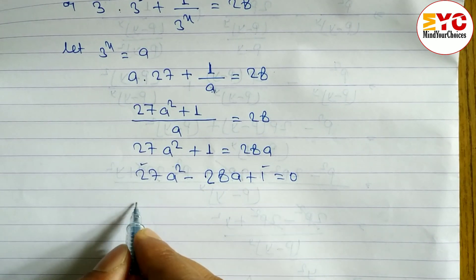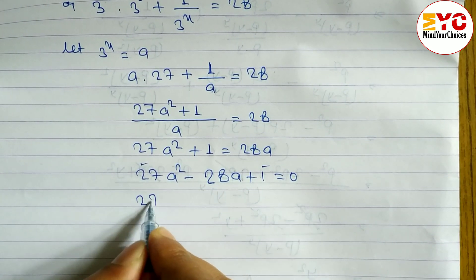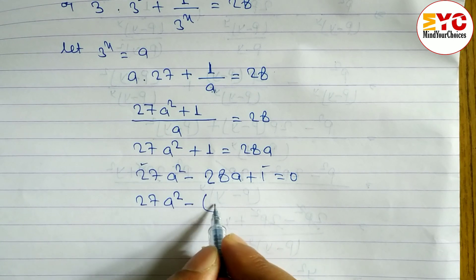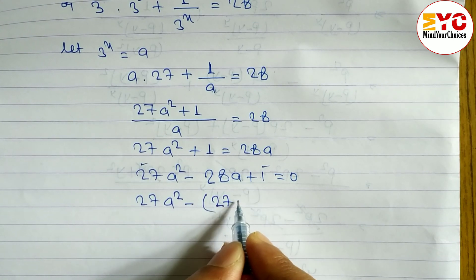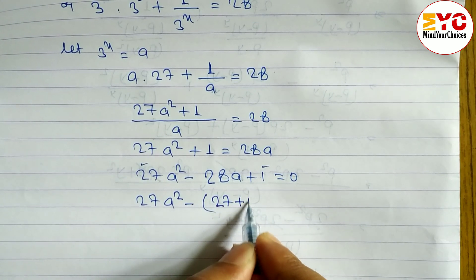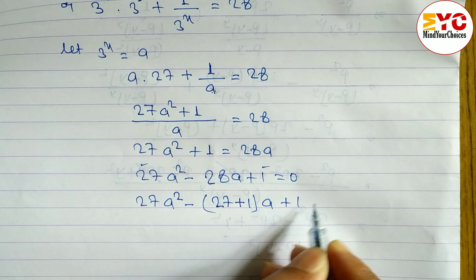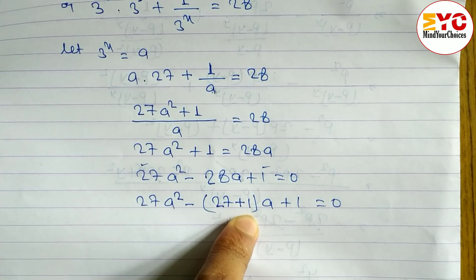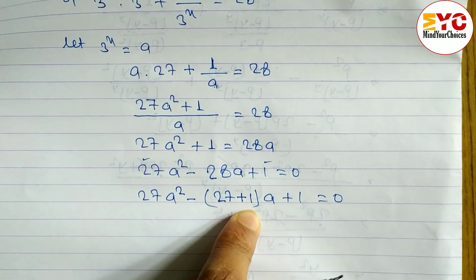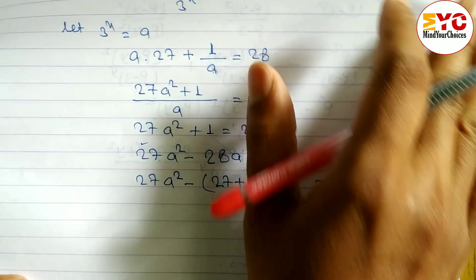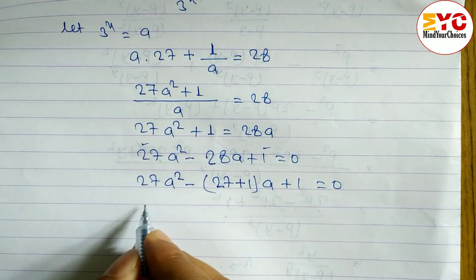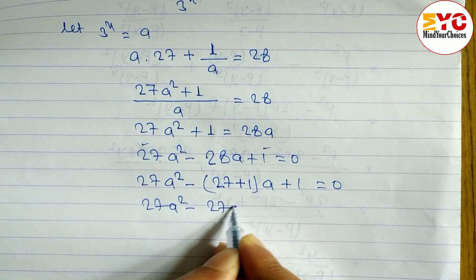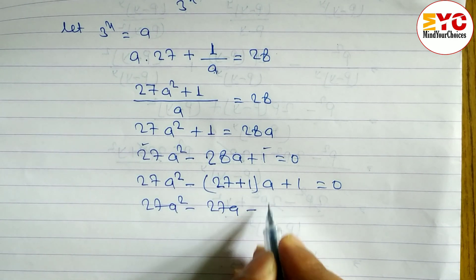The factors are 27 and 1, because when you multiply 27 into 1 you get 27, and when you add you get 28. Now let's open the bracket: 27a squared minus 27a minus a plus 1 is equal to 0.